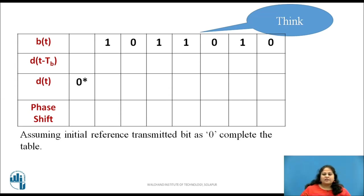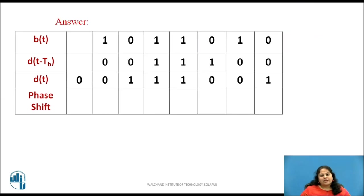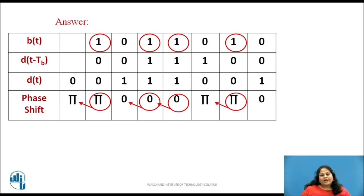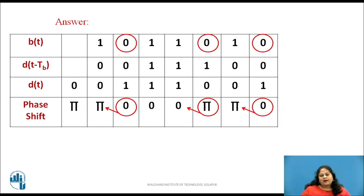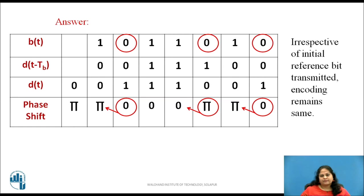With this background, pause the video and complete this table. Assume the initial reference bit transmitted as 0. For the given bit stream, the encoded bit obtained is as shown in D(t). Also, the phase of the transmitted signal is as shown. We can again observe that for each input bit 1, the transmitted signal's phase is the same as that of its previous transmitted bit. And for each bit 0 of the input bit stream, the transmitted signal's phase is 180 degrees shifted with respect to its previous transmitted bit. Thus, irrespective of the initial reference bit transmitted — either 0 or 1 — the encoding remains the same.